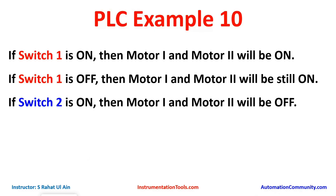Example 10: If Switch 1 is on, then Motor 1 and Motor 2 will be on. If Switch 1 is off, then Motor 1 and Motor 2 will still be on. If Switch 2 is on, then Motor 1 and Motor 2 will be on. In this video, we will latch Motor 1 and Motor 2 so that when we turn off Switch 1, the outputs will still remain true.